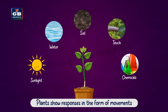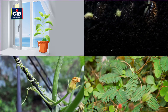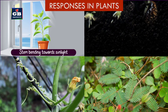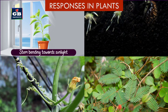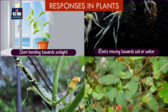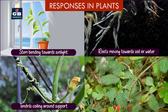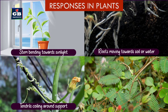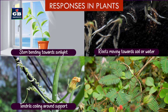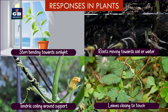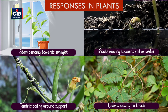Most of these responses are in the form of movements. For example, stems bending towards sunlight, roots growing towards soil or water, tendrils of plants coiling around a support, and closing of leaves of the touch-me-not plant when it is touched.